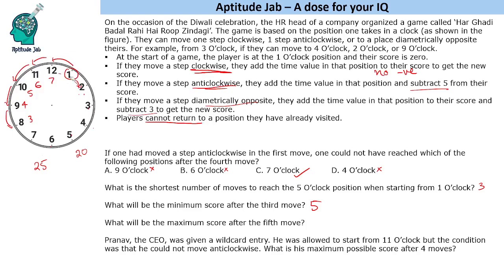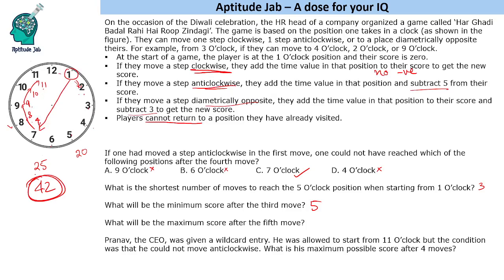The optimal strategy: first move diametrically opposite from one to seven, which gives four points (seven minus three). Then move clockwise through eight, nine, ten, eleven — gaining eight, nine, ten, and eleven points respectively. That gives a total of four plus eight plus nine plus ten plus eleven, which equals forty-two points. This is much higher than the twenty-five points many people might guess.